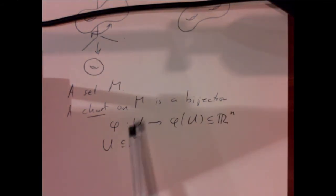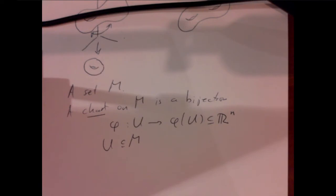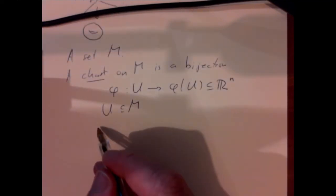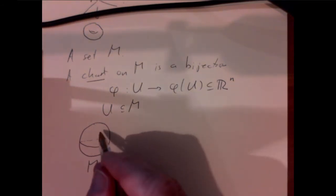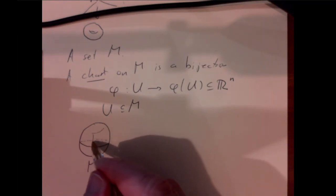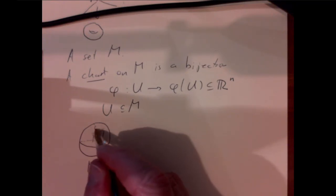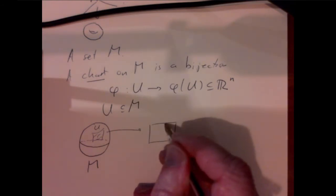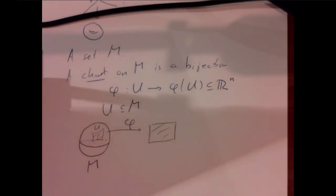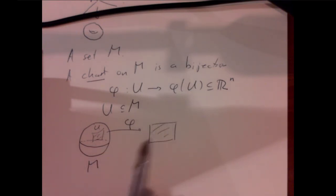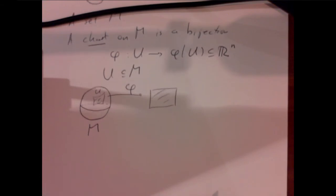That identifies a piece of this abstract M with a piece of Euclidean space. The term chart is chosen deliberately because we want to think about geography. Our standard example is the Earth's surface — M is the Earth's surface. We don't draw all of it on a single piece of paper; we take some chunk U and draw that on a flat piece of paper. The operation that does that is our phi, our chart — for example, a Mercator projection of some chunk of the Earth's surface onto a flat piece of paper. It's traditional notation to write the chart as a pair U, phi.